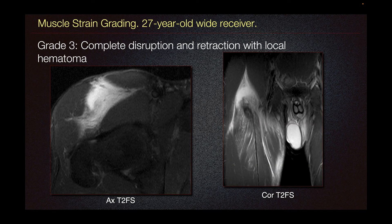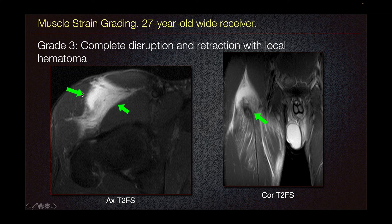This is a different patient, a 27-year-old wide receiver. Grade 3 strain is characterized by complete disruption and retraction of the fibers with local hematoma. On axial T2 fat sat imaging, we can see this hematoma. On our coronal T2 fat sat imaging, we can see these torn fibers, which are retracted distally. In the proximal aspect, we can see the hematoma and surrounding edema about the rectus femoris.